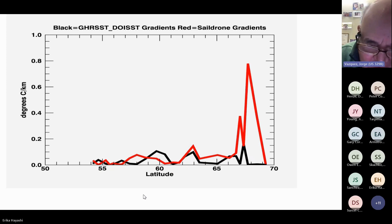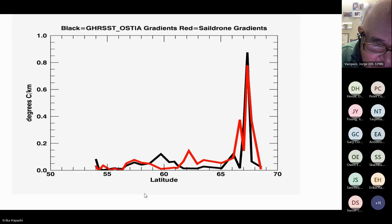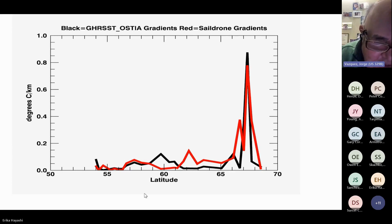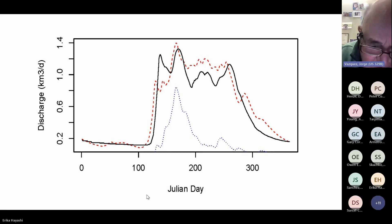For DOISST, the product doesn't seem to capture the large gradients seen in the northern part of the deployment, which could be due to smoothing and resolution issues. OSTIA has the highest correlation with the SAIL drone deployment. There is also an example showing how the Yukon River discharge must be considered in understanding SST gradients.